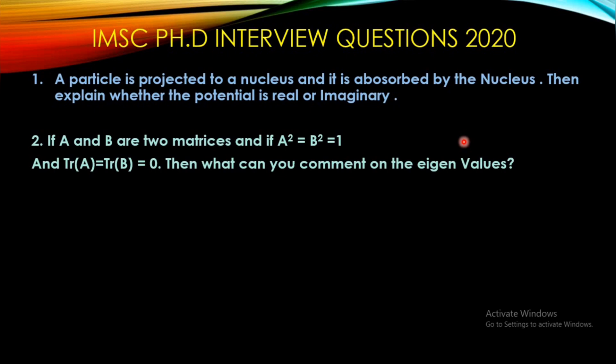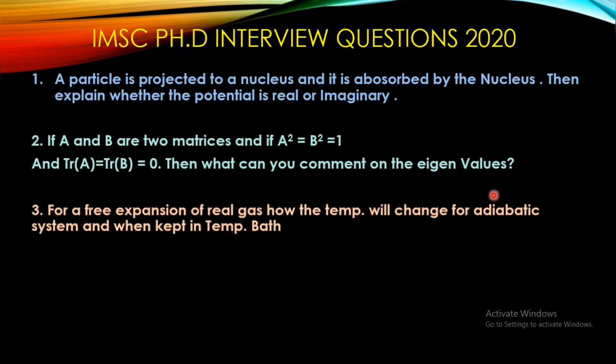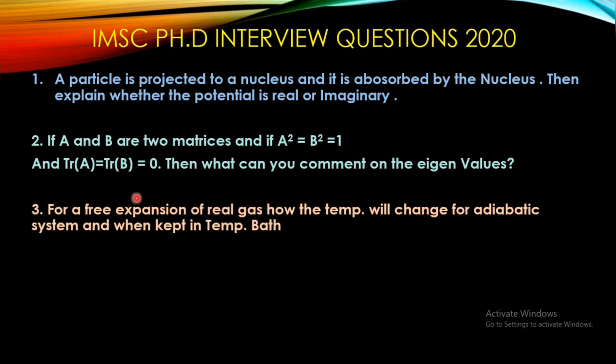The second question was: let's say you have matrices A and B, where A² = B² = 1 and trace of A and trace of B equal to 0. Then what can you comment on the eigenvalues of these two matrices?